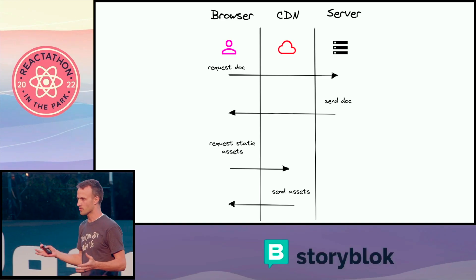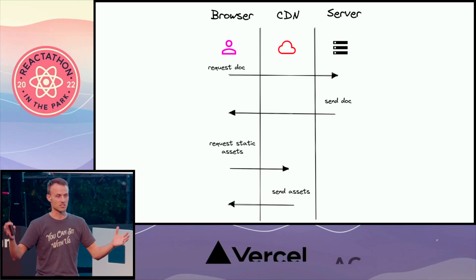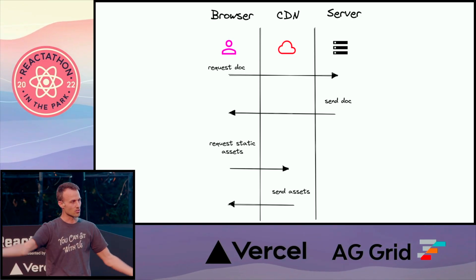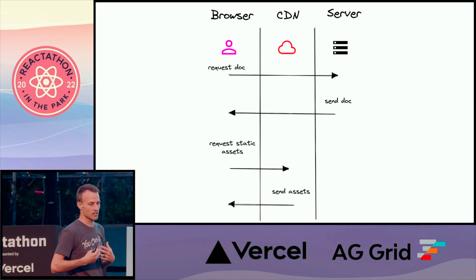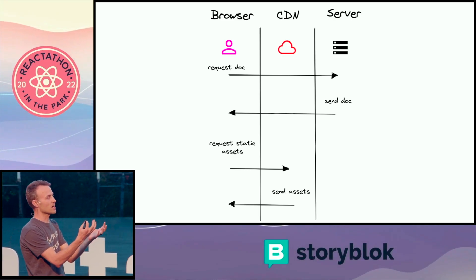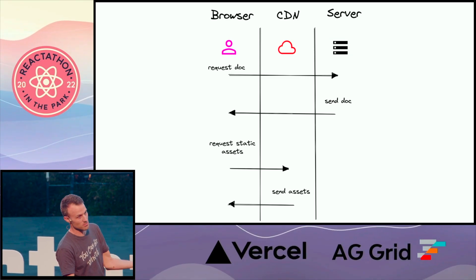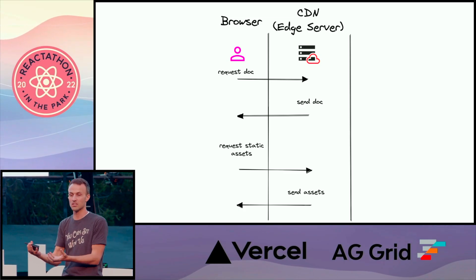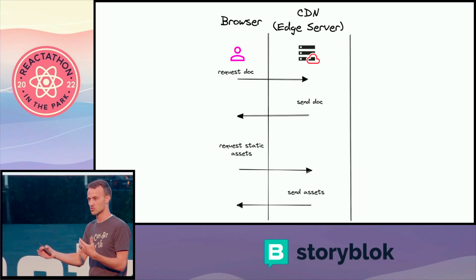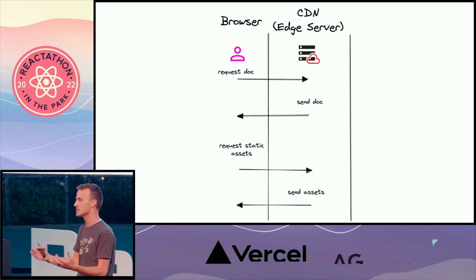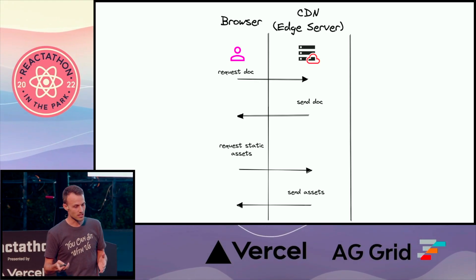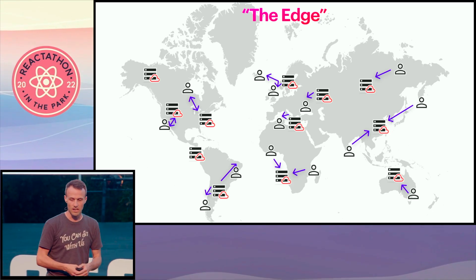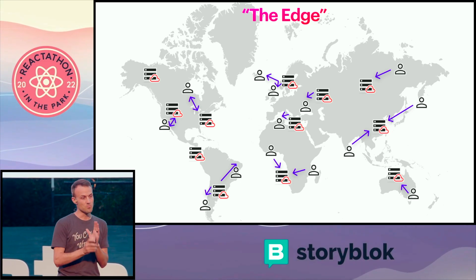The edge — there are a couple of different implementations, but many are coming from the CDN space. Those who have servers all over the world thought: we solved the static problem by copy-pasting static files all over our network. What if we made it so that developers could send scripts that they could run to dynamically generate HTML? And so that's what many of these have done — they let you upload a file and run code to dynamically handle requests. Now you can know who's making the request and dynamically generate HTML for that specific user.